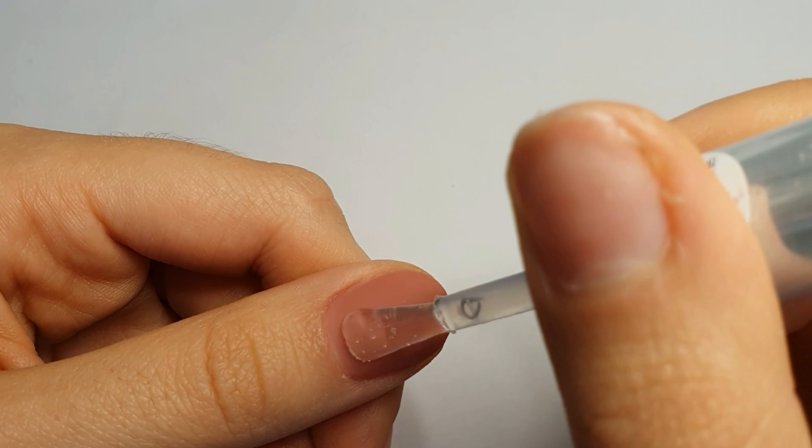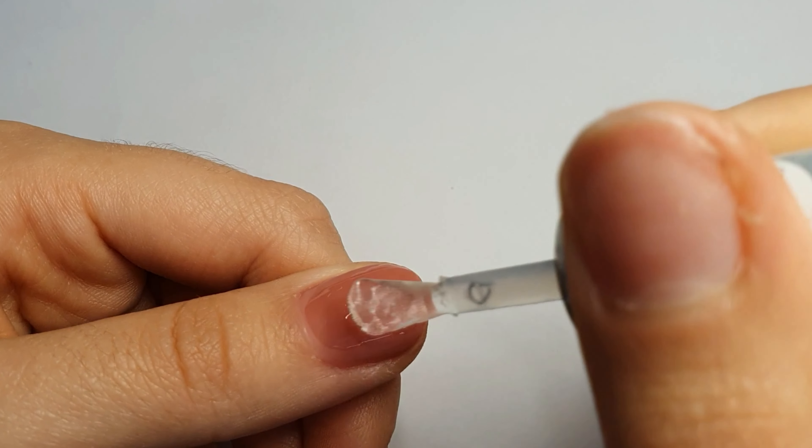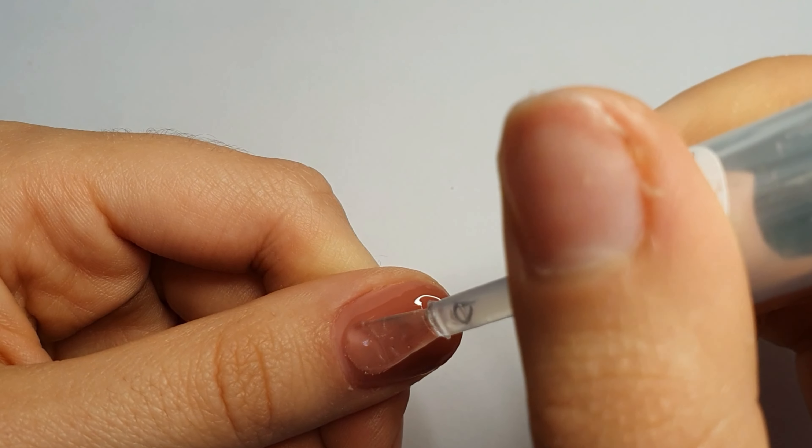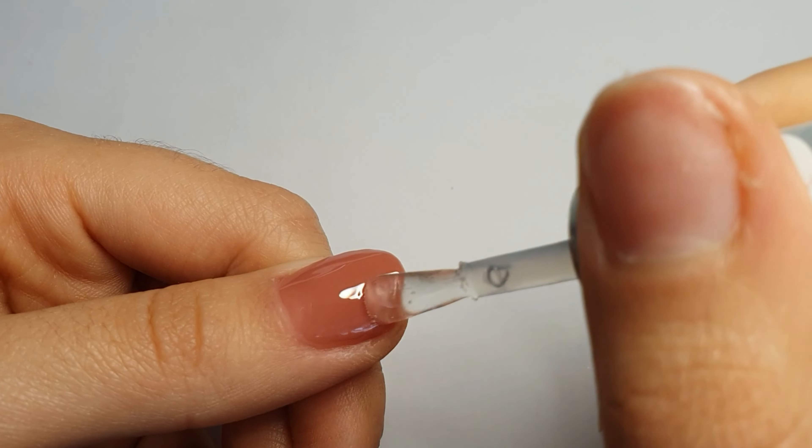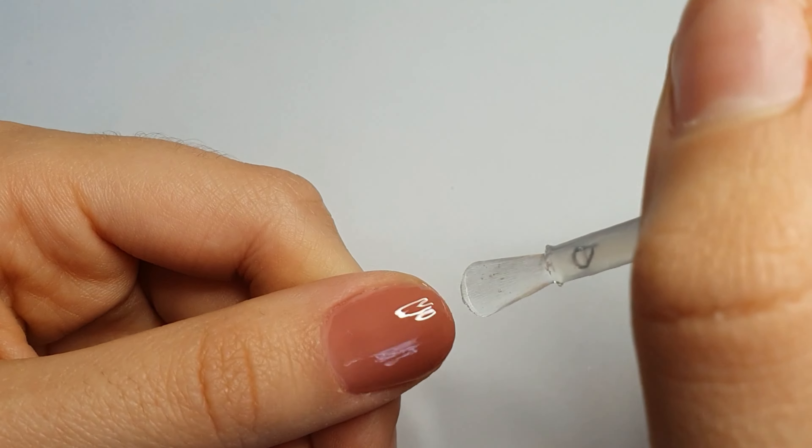Now I'm going to add top coat. I'm going to apply it exactly like the other layers of gel polish and everything else. After applying it, I'm going to cure it for 60 seconds.